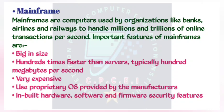Mainframes are computers used by organizations like banks, airlines, and railways to handle millions and trillions of online transactions per second. Important features of mainframes are: big in size, hundreds of times faster than servers (typically 100 megabytes per second), very expensive, use proprietary OS provided by the manufacturers, and have inbuilt hardware, software, and firmware security features.